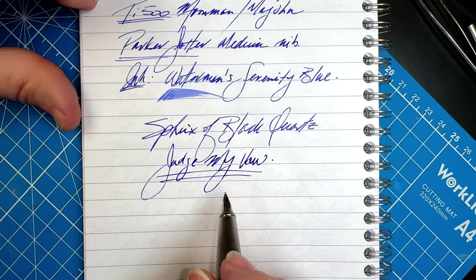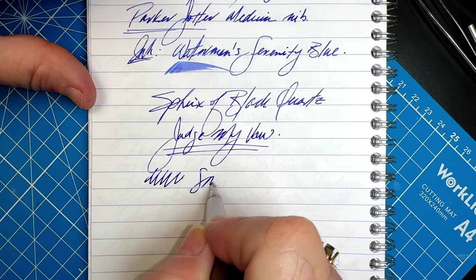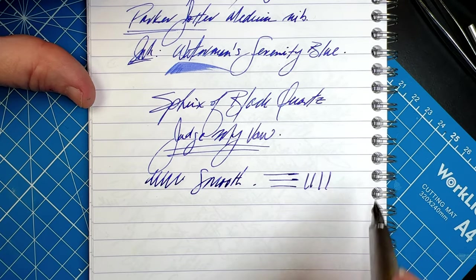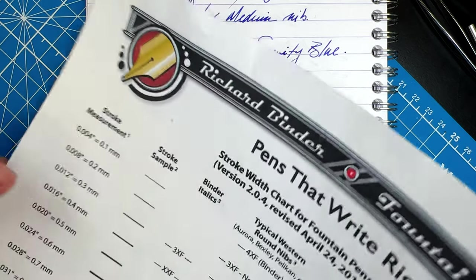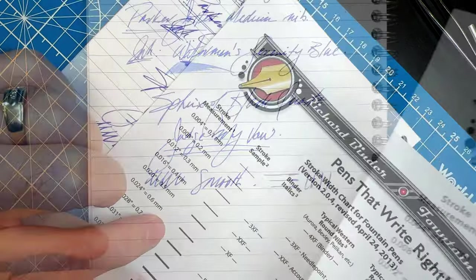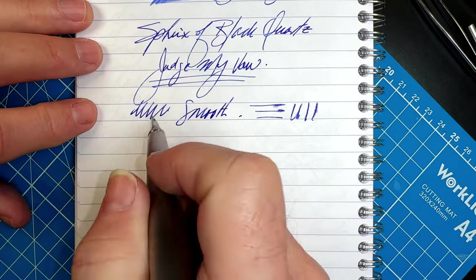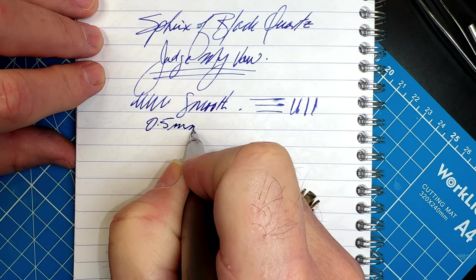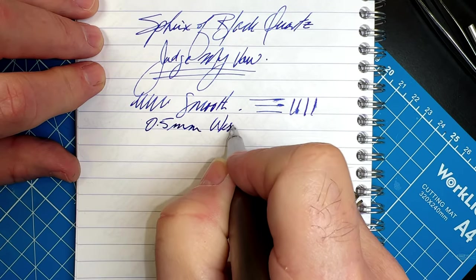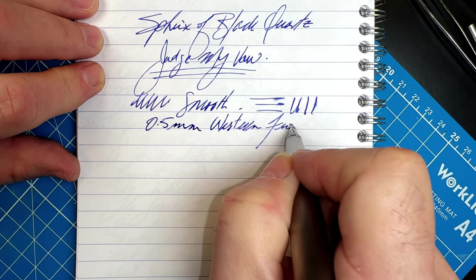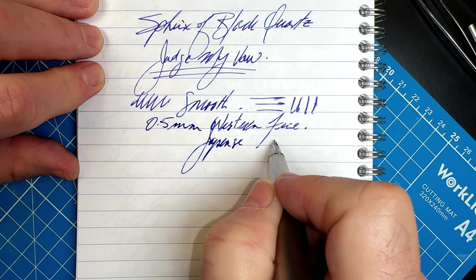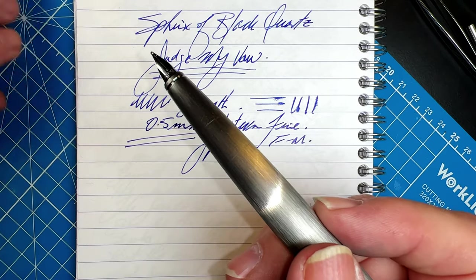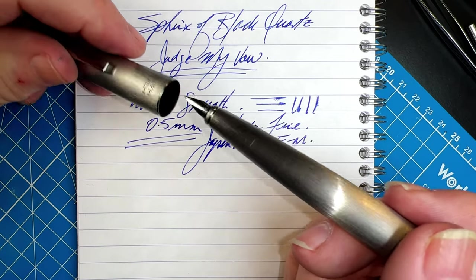Well this is very nice now. Very smooth, very wet, and much more of a medium line. Let's just get a quick measurement on this with my Richard Binder chart. Yeah, it's what I expected. This is a 0.5 millimeter, maybe a touch bigger, which is a western fine or a Japanese fine to medium.